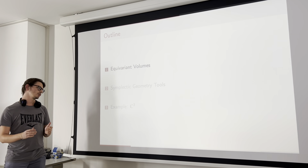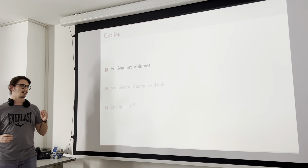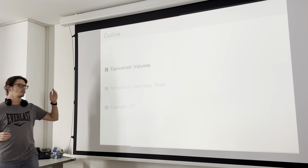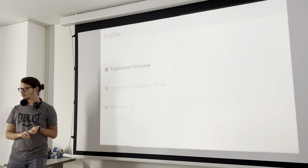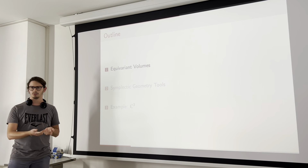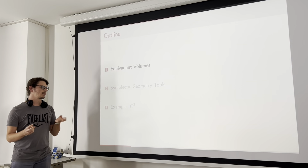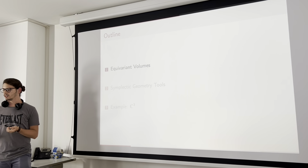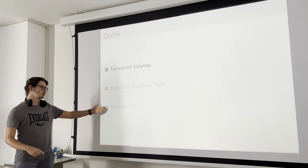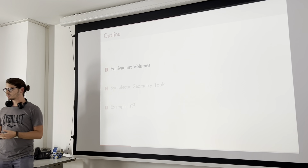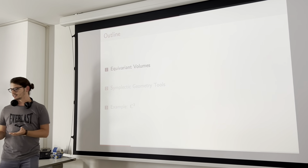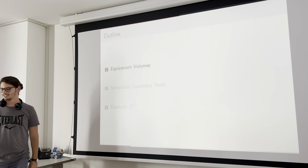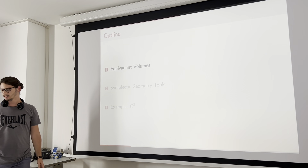The outline of today's talk is as follows: we start with a brief introduction to both the classical and the quantum equivariant volumes; next, we provide the symplectic geometry tools — reviewing the definition of Lagrangian submanifold and talking about symplectic cuts; and then we will see how all this machinery comes together in the example of C³ with the standard symplectic structure.